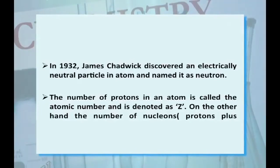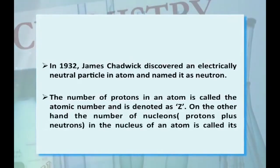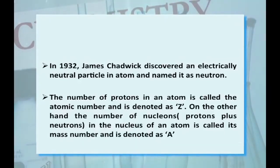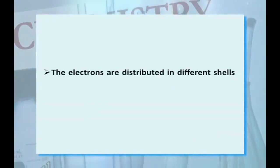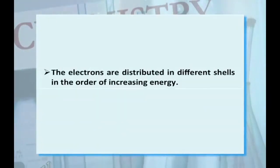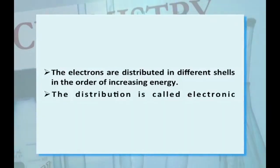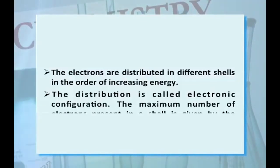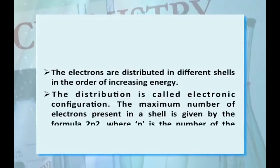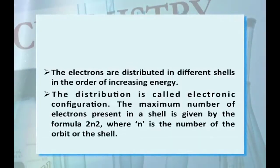The number of protons in an atom is called the atomic number, denoted as Z. The number of nucleons — protons plus neutrons — in the nucleus is called the mass number, denoted as A. Electrons are distributed in different shells in order of increasing energy, as per Bohr's postulate. This distribution is called electronic configuration. The maximum number of electrons in a shell is given by 2n², where n is the shell number.